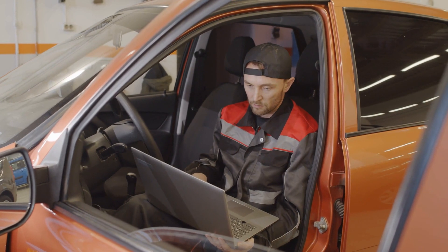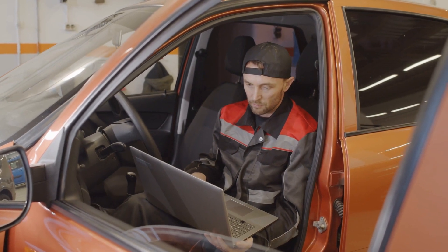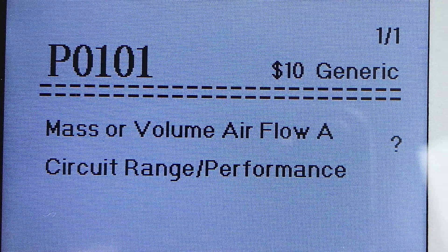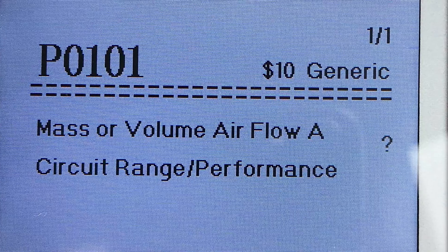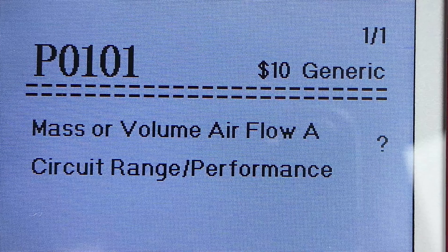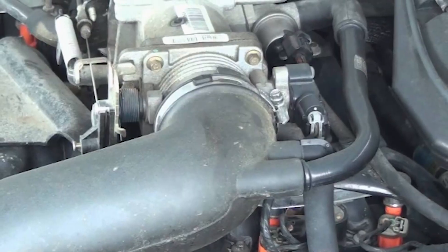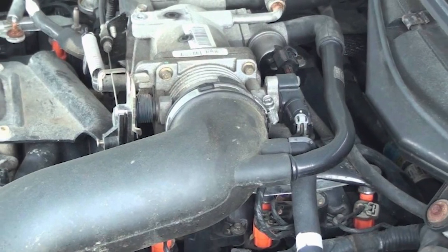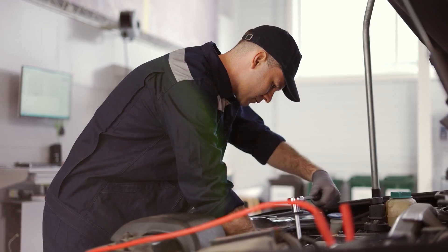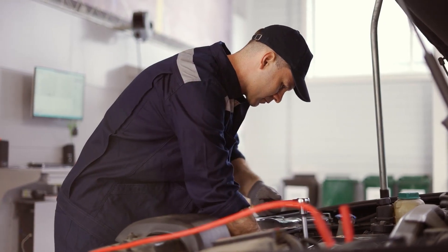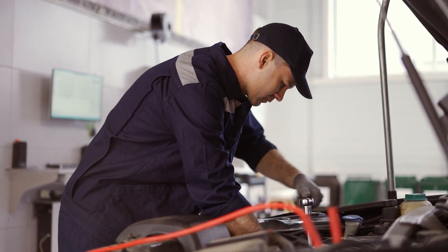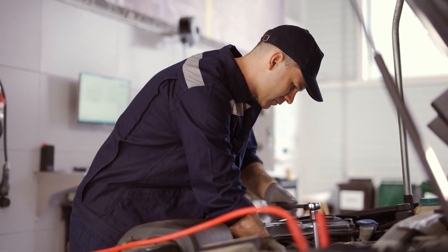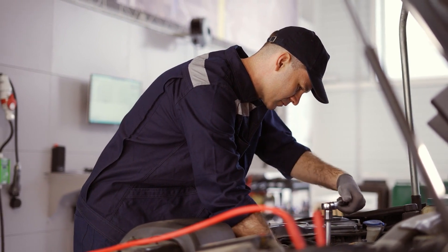P0101 indicates a problem in the MAF sensor's airflow readings. This is often attributed to sensor malfunctions or issues within the air intake system. Technicians typically conduct a thorough inspection of both the sensor and the air intake system to diagnose and resolve this code.